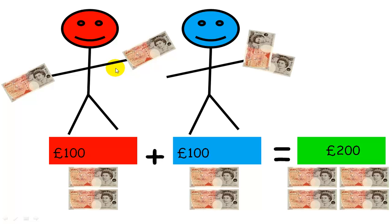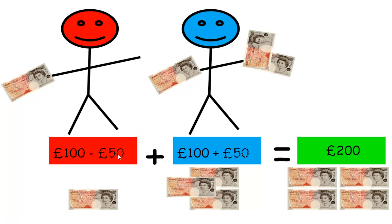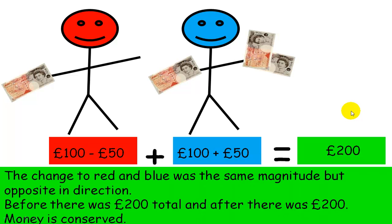Changed it to pounds, not dollars. If the red person gives the blue person 50 pounds, then the red guy or red person has had a negative change of 50. The blue person's had a positive change of 50. They're equal in magnitude, but they're opposite in direction. The total amount of money, though, has remained constant at 200 pounds. So you can think of this with momentum. If the change in magnitude was identical for each object, but the directions were opposite, then it means that the total amount of momentum was also constant.